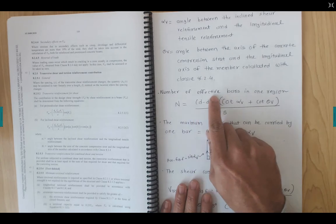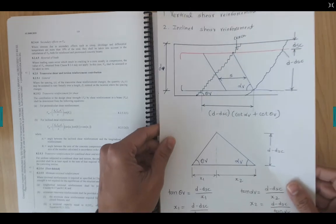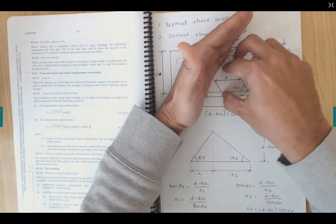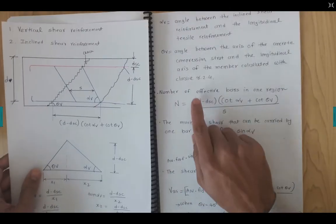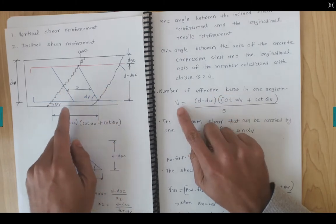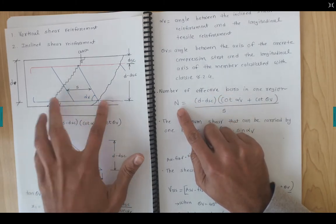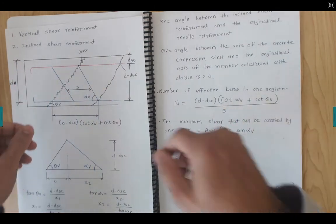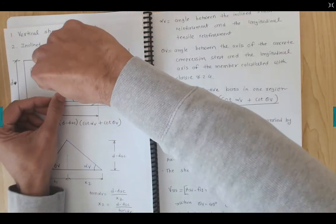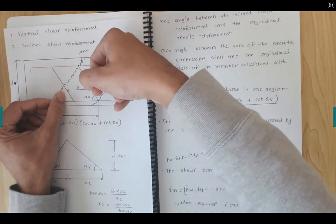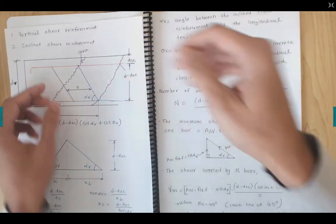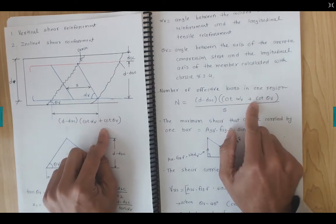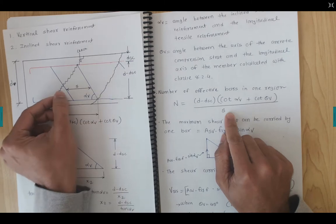Now we calculate the number of effective bars n within one region — the region between two consecutive cracks. The number of bars is the total horizontal distance divided by the spacing s. So n equals (d − dsc)(cot αv + cot θv) divided by s, which counts how many bars cross between one crack and the next.